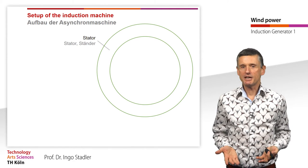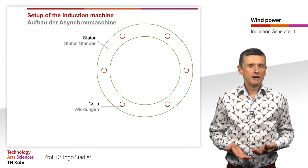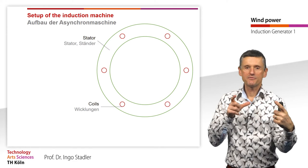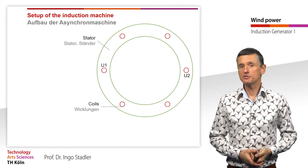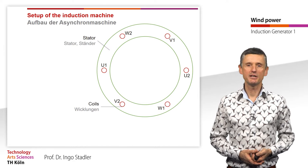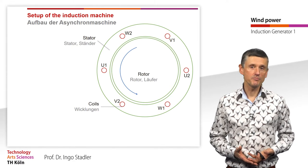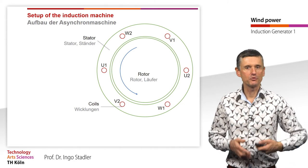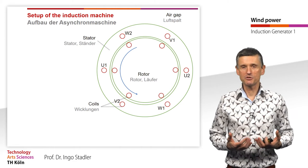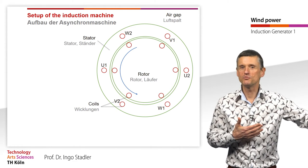The stator is fixed and contains coils. Always two coils are connected to opposite sides: U1 and U2, V1 and V2, W1 and W2. The rotor sits in between, driven for example by the rotor blades, with an air gap in between through which all the power must be transmitted from the rotor to the stator and then to the grid.